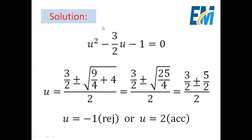This is a quadratic equation and we will find u using the quadratic formula. So u = (3/2 ± √(b² − 4ac)) / 2a, where b² − 4ac = 9/4 minus 4(1)(−1) = 9/4 + 4 = 9/4 + 16/4 = 25/4. Since 25/4 = (5/2)², the square root is 5/2.